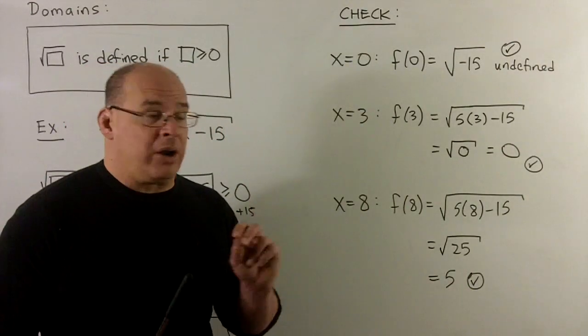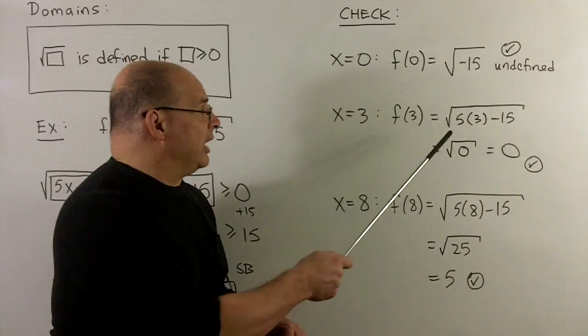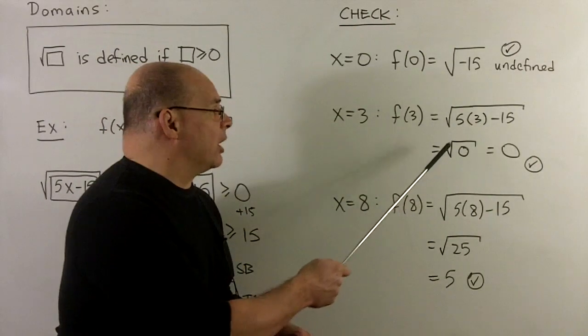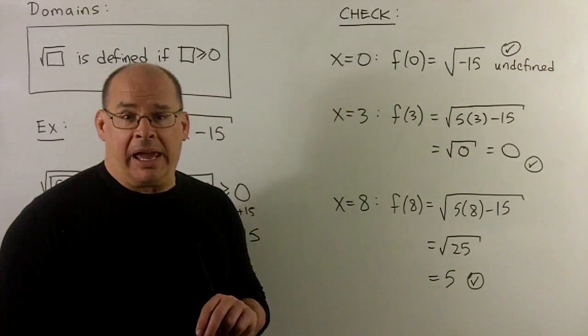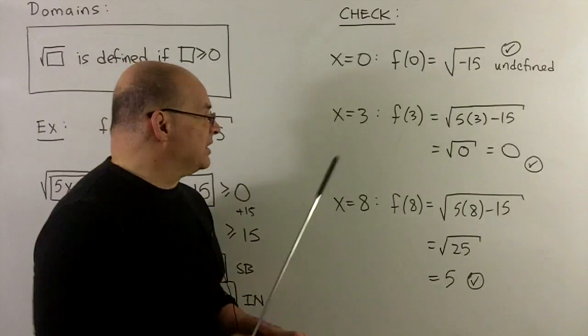If we try 3, that's right on the edge of the domain. We're going to get 15 minus 15, square root of 0. I get a 0. A number's coming out, so that's in the domain. So 3's in the domain.